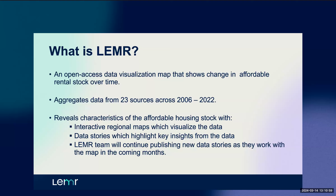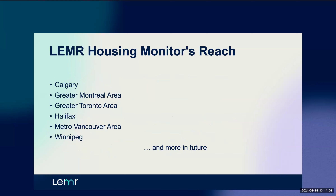So where is LEMUR located currently? The goal is to provide open access and easily searchable information that will enrich evidence-based decision making in the regions it covers. Currently, the tool has been located in Calgary, Greater Montreal area, Greater Toronto area, Halifax, Metro Vancouver area, and Winnipeg — for the first time presenting an amalgam of critical information about the housing stock in those areas. It can be scaled and expanded to different regions, which is our intention.